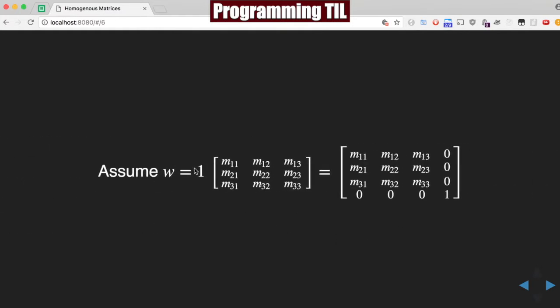So let's have an example. Assume that W equals 1, and we have this matrix right here, and we're going to now have it in a 4 by 4. So the top left portion is the regular values, and then the W is just 1.